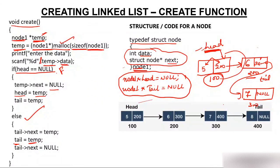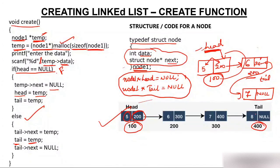Finally we have created a linked list. After all insertions we have a linked list with four nodes. The first node is represented by head, and the last node is represented by tail. Head has 100, head->data is 5, head->next is 200. Tail has 400, tail->data is 8, and tail->next is null. This is the final linked list we have created — that is how the menu and create function work.